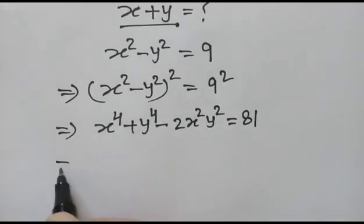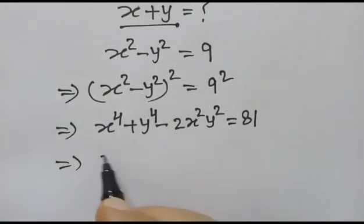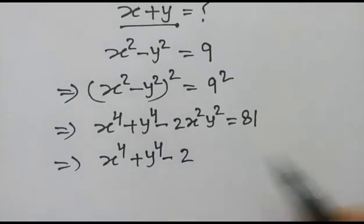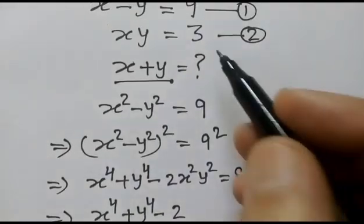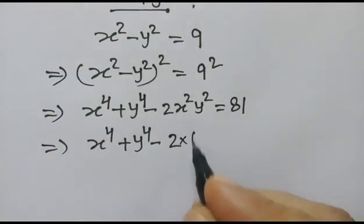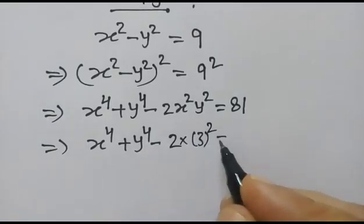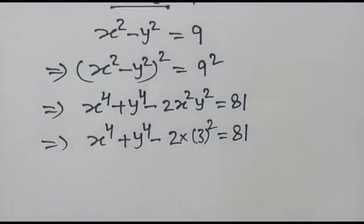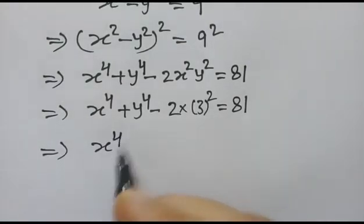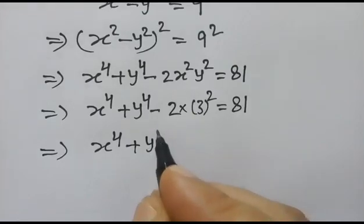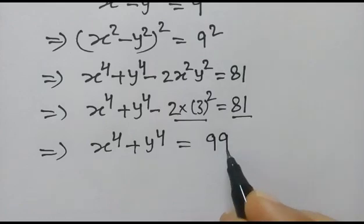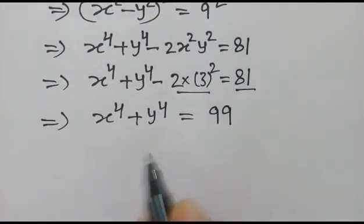Now, x to the power 4 plus y to the power 4 minus 2 x squared y squared equals 81. Since xy equals 3, we have 2 times 3 squared equals 18. So x to the power 4 plus y to the power 4 equals 99.